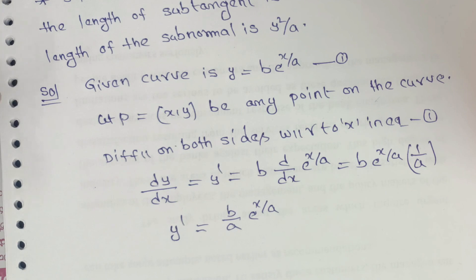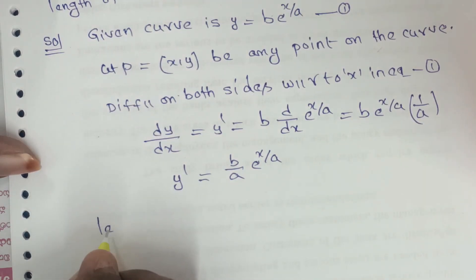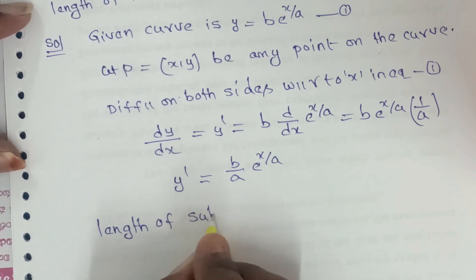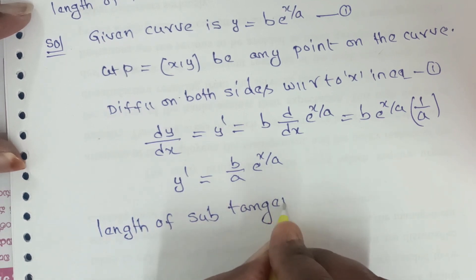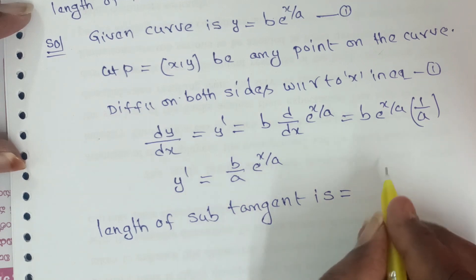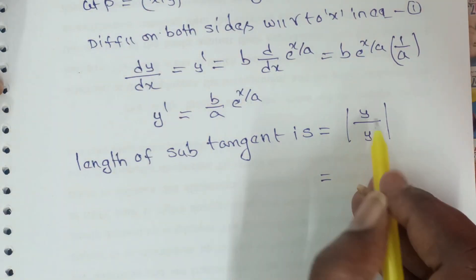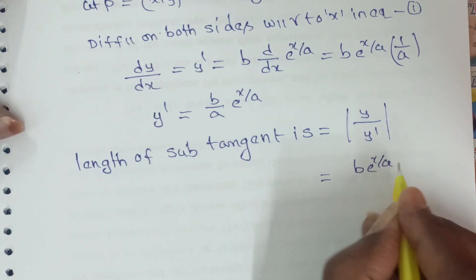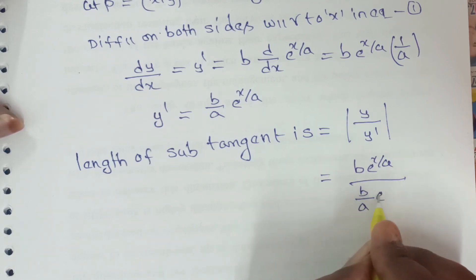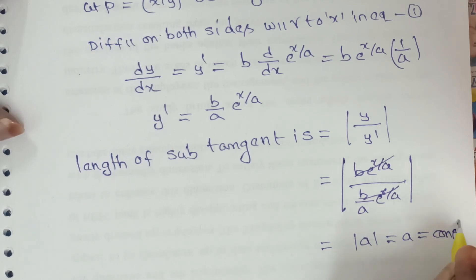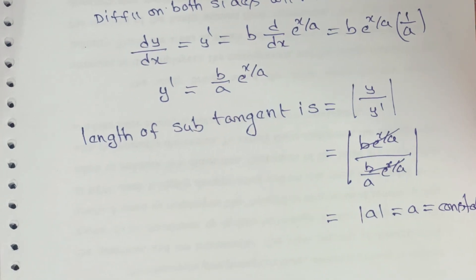Now for the length of subtangent: it equals |y/y'| which is the modulus of [b*e^(x/a)] / [(b/a)*e^(x/a)]. The e^(x/a) terms cancel, giving us |a|, which equals a. Since a is a constant, the length of subtangent is constant.